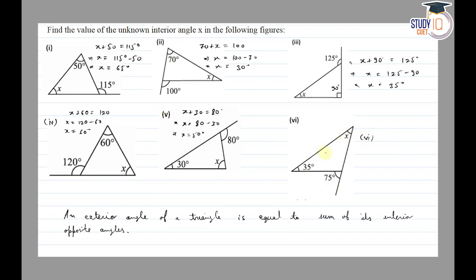In the sixth figure: the exterior angle equals the sum of interior opposite angles, so x plus 35 is equal to 75. Therefore x is equal to 75 minus 35, giving x equal to 40 degrees. So here we had to find the value of x, and we used the theorem — an exterior angle of a triangle is equal to the sum of its interior opposite angles — to find all values. Thank you.